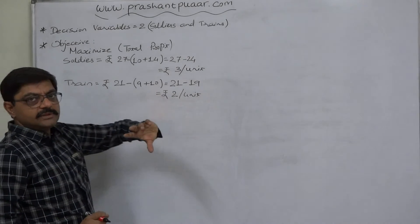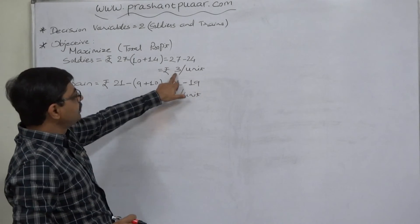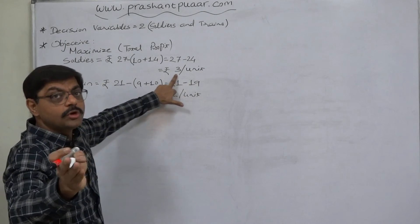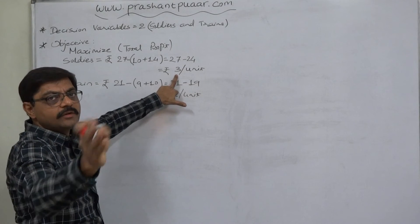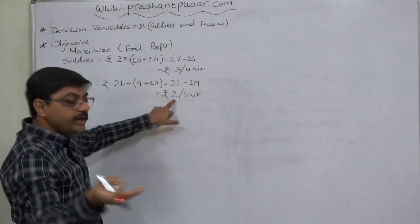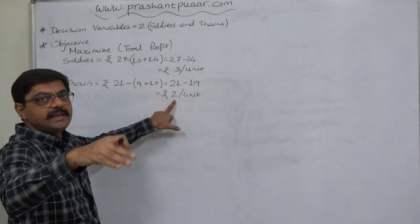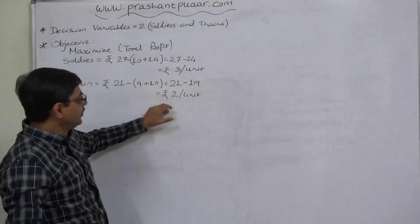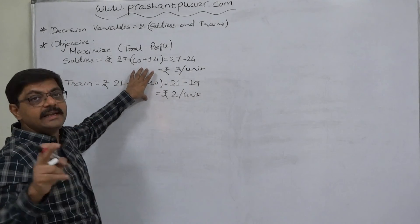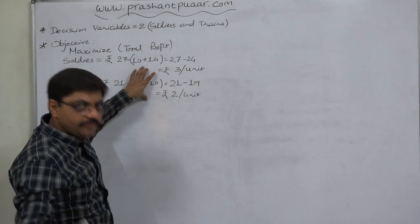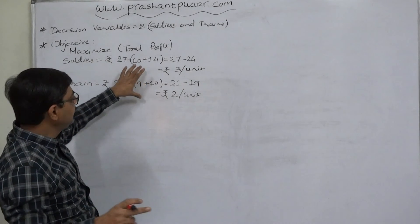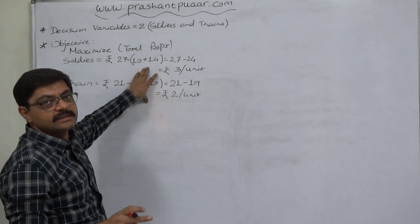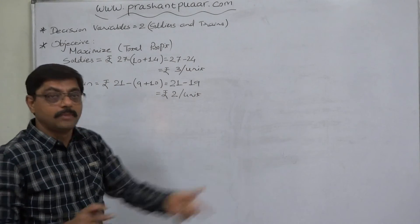We will manufacture x1 units of soldiers, each giving profit of rupees 3, so 3×x1 gives total profit from soldiers. Similarly, 2×x2 gives total profit from trains. The grand total profit of the firm per week is 3x1 + 2x2, and we want to maximize that total amount.